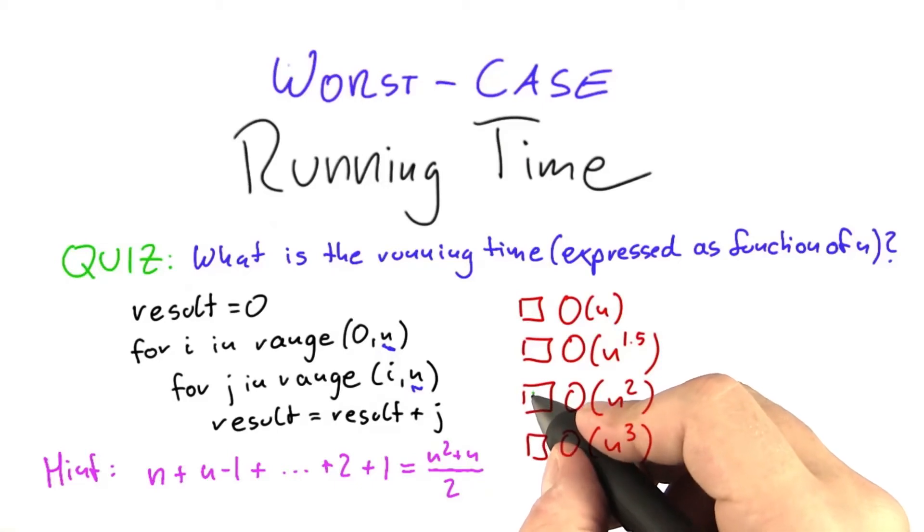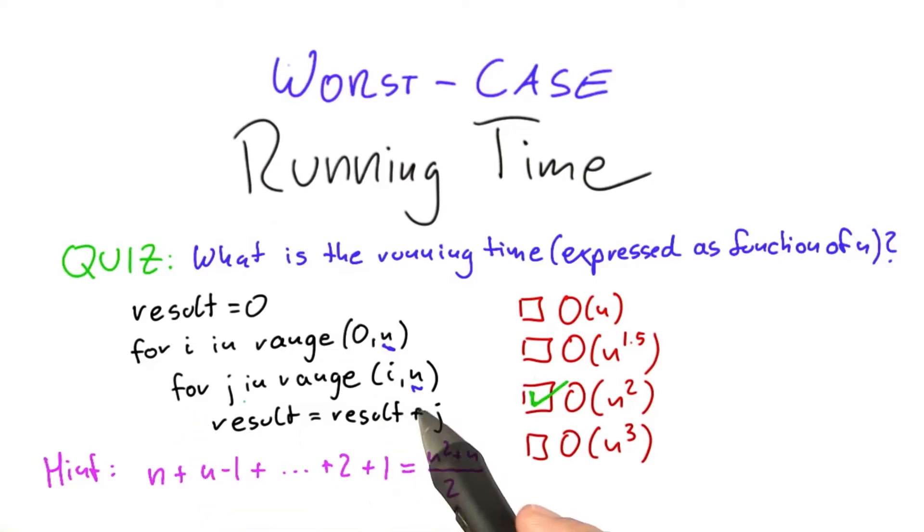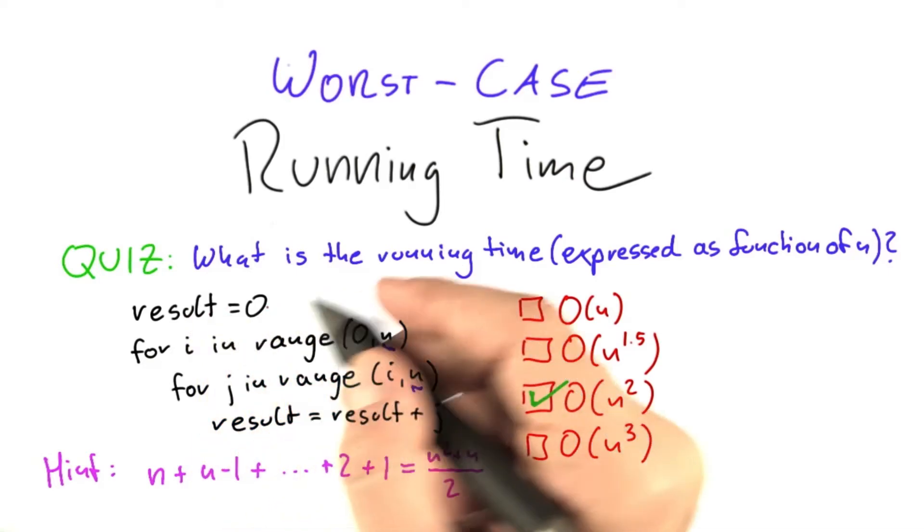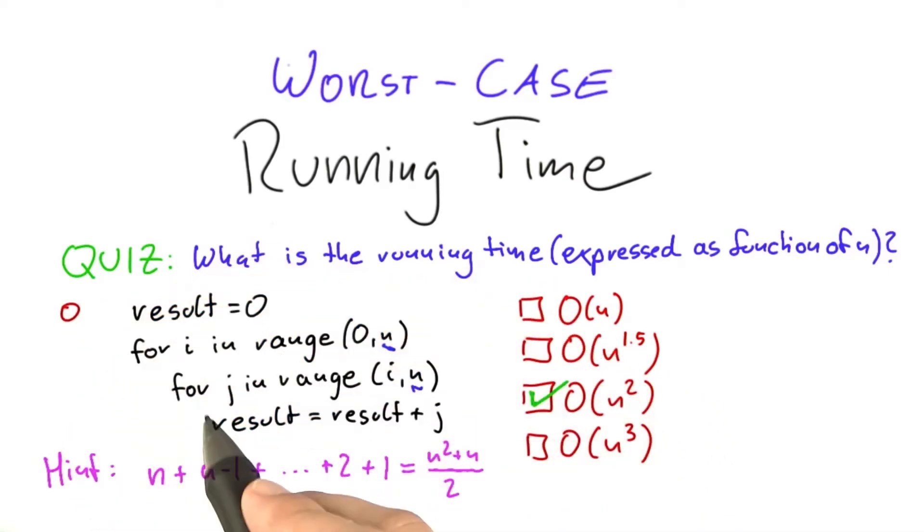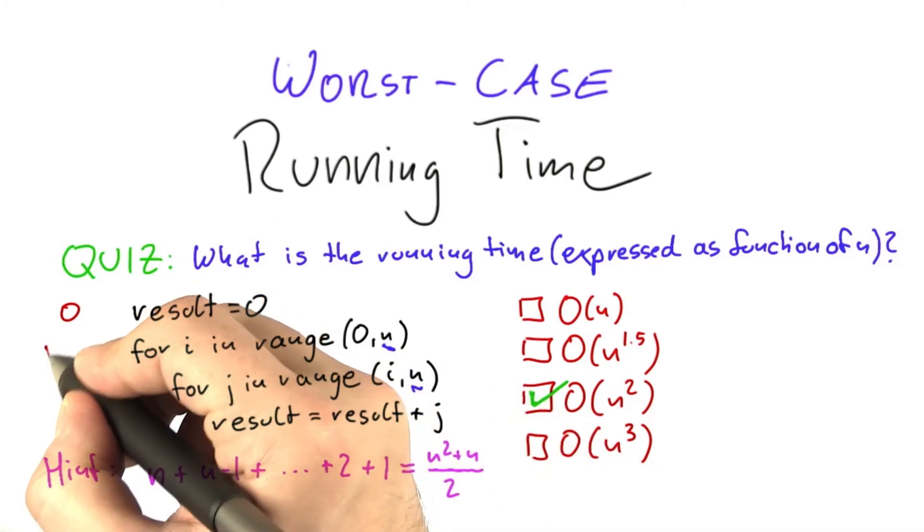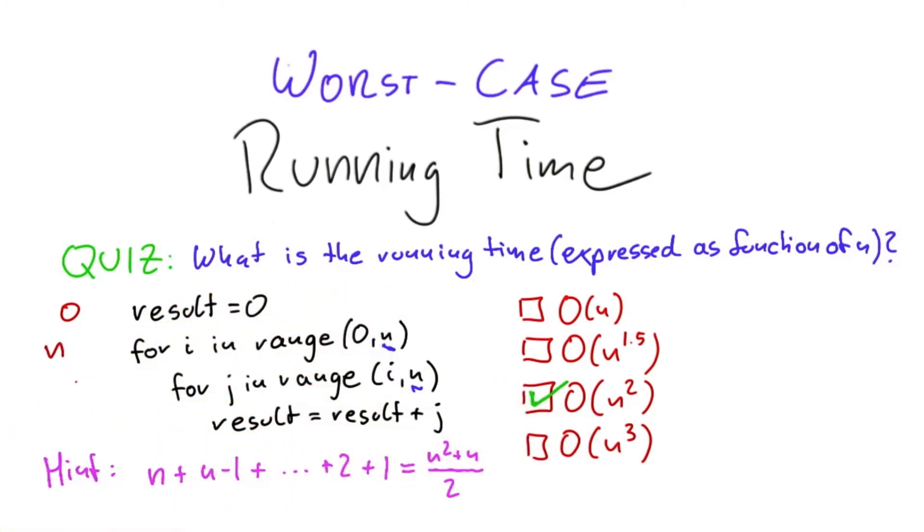So the correct answer here is O of n squared. And to see that, we just have to look at how many time steps this algorithm requires as a function of n. So as you remember, this line up here takes zero time steps because it's just a memory access and we said those were free. This one here, it depends again what you do with the end of the range here, but it's going to be executed about n times. So it's either n or n plus 1. That doesn't really make much difference here because now we can use big O notation.